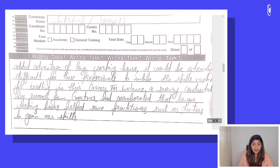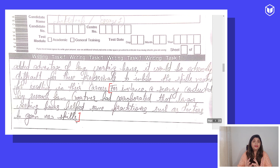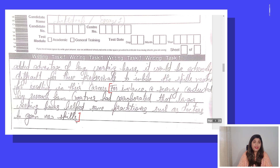'For instance, a survey conducted by research firm Gartner had corroborated that longer working hours helped some practitioners such as doctors to gain new skills.' Here also the example is not apt — it feels like a repetition of the main idea rather than a concrete example. The student could instead have written something like: 'A survey conducted by research firm Gartner corroborated that in a particular hospital where doctors worked longer hours, they were experts in their field.'